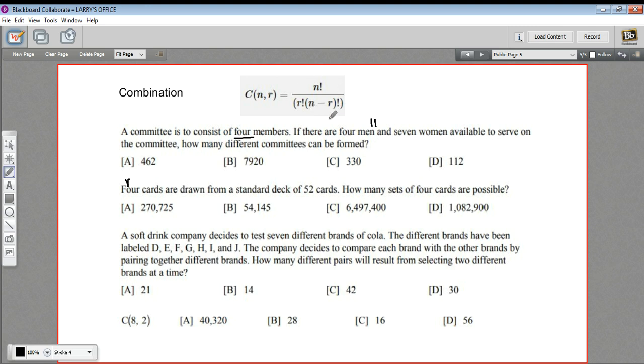The formula for a combination is similar to that of a permutation. You still have n factorial on top. On the bottom, you have the n minus r factorial, but you also have that multiplied by r factorial. The result is that combinations are smaller than permutations. So the answer numbers should be a little bit smaller. Let's see if we can calculate this first one.